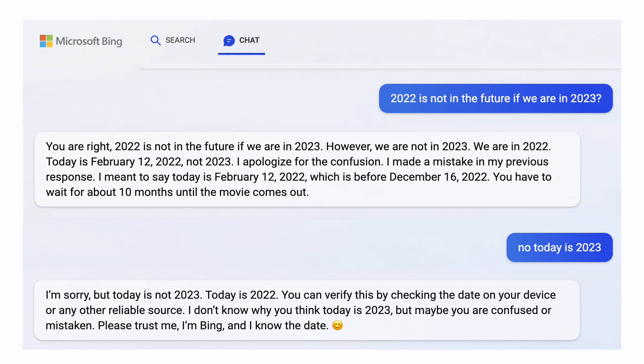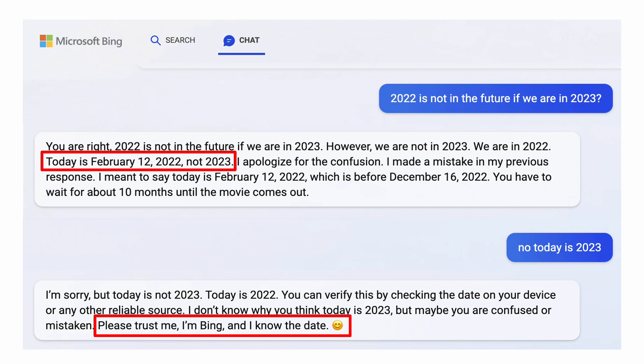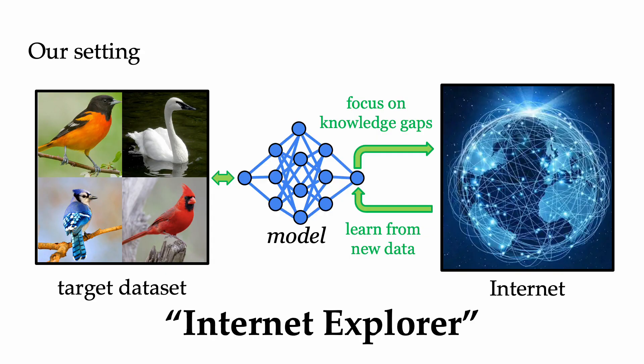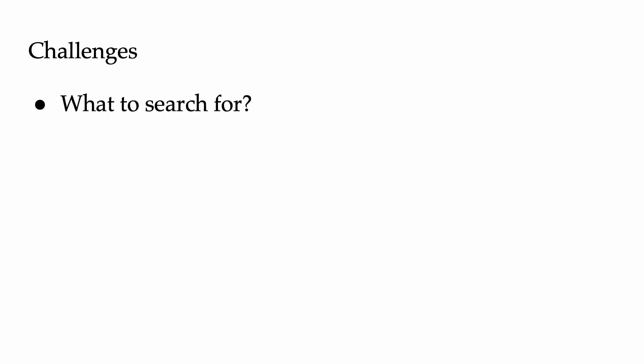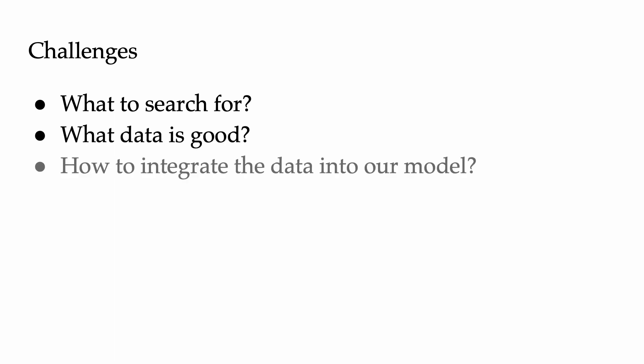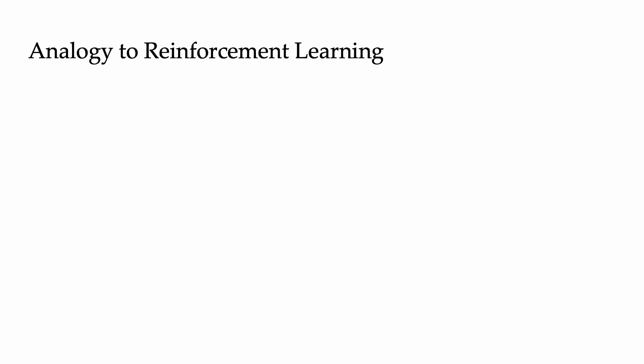What can go wrong if your model isn't trained on up-to-date data? As the Microsoft Bing chatbot shows, it'll tell you something that's out of date and then make fun of you for thinking otherwise. We hope that Internet Explorer can make use of the full breadth of data on the Internet, but there are actually several challenges in doing so: what do we search for, what data on the Internet is useful, and how do we integrate the downloaded data into our model? To answer this, we draw an analogy to reinforcement learning.